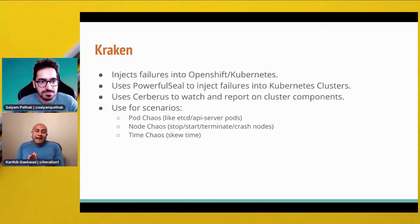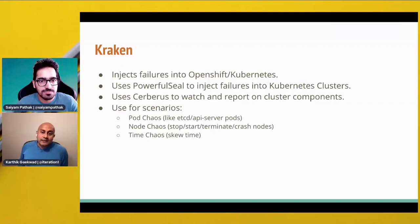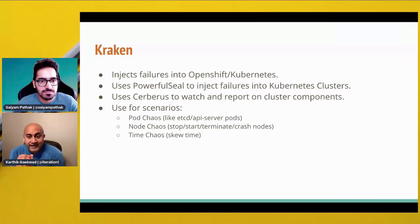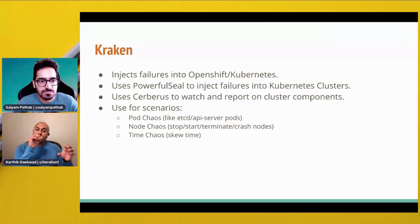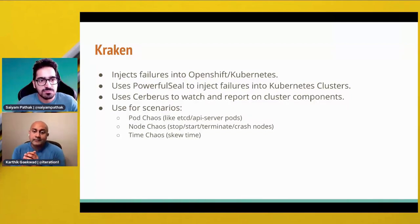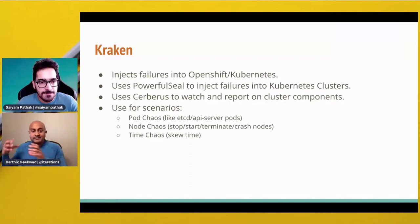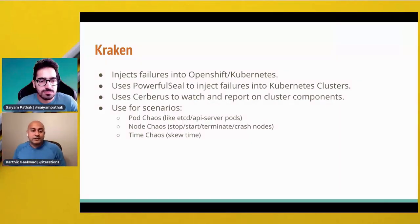First up, Kraken. What is Kraken? Kraken helps us inject failure into either OpenShift or Kubernetes. It's built from two components. One of them is Powerful Seal, which injects failures onto Kubernetes clusters — it actually goes and does something to your cluster. And then there's Cerebrus, that watches and reports on cluster components. When Powerful Seal goes and kills a pod or slows down a node, Cerebrus actually sits there and watches for changes in your infrastructure and tells you what's actually going on.